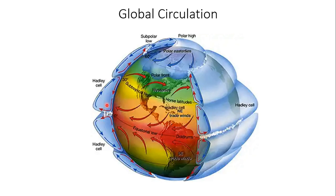Air rises at the equator — the upward arrows indicate rising, cooling, condensing air forming clouds and precipitation. The sun's intense solar radiation heats the air, making it positively buoyant; it rises to the upper troposphere and spreads out. Once air reaches about 30 degrees north and south latitude, it sinks, resulting in high pressure and fair weather — associated with the subtropical high pressure systems. This area is known as the horse latitudes at about 30 degrees latitude.